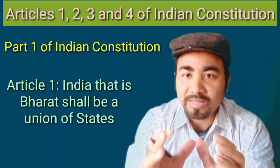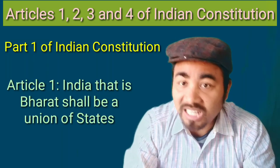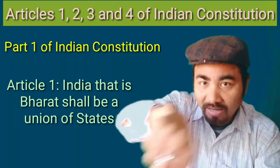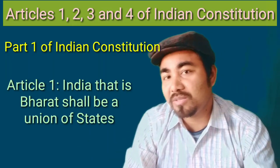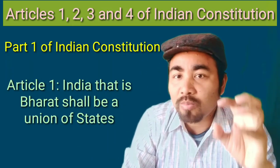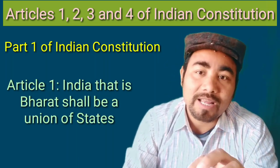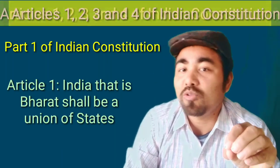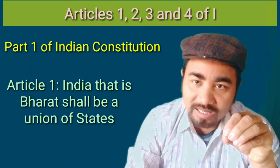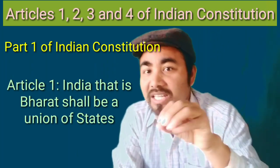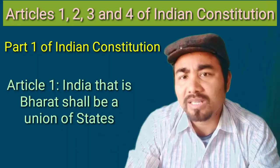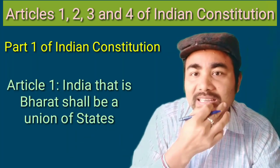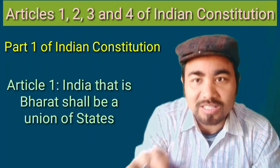The constitutional government has a schedule — that is Schedule 1. The territory of India shall comprise specific states and territories listed in Schedule 1. This is the territory of India shall comprise, and the territory of each state will be specified accordingly.